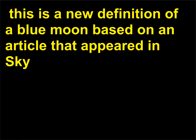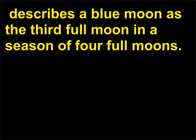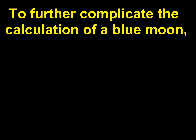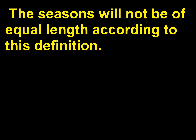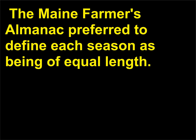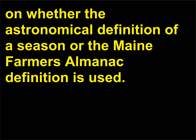This is a new definition of a blue moon based on an article that appeared in Sky and Telescope in 1946. The older definition, found in the Maine Farmer's Almanac dating back to 1819, describes a blue moon as the third full moon in a season of four full moons. Astronomers define the start of a season based on the actual position of the sun throughout its annual orbit, so seasons will not be of equal length. The Maine Farmer's Almanac preferred to define each season as being of equal length; therefore, determining the occurrence of a blue moon will depend on which definition of a season is used.